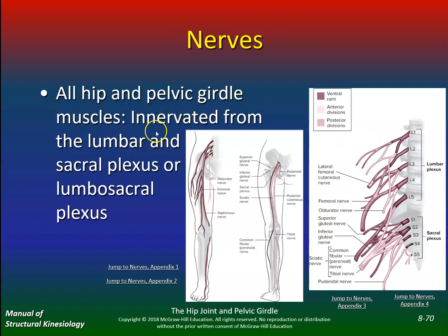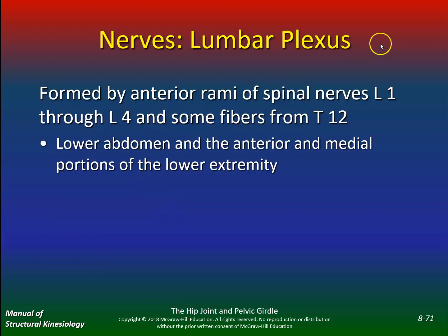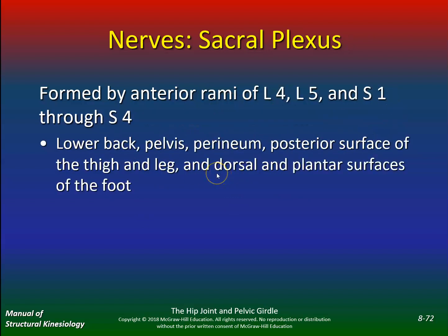The nerves: all hip and pelvic girdle muscles are innervated from the lumbar and sacral plexus. The lumbar plexus is formed by the anterior rami of the spinal nerves serving the lower abdomen and anterior medial portions of the lower extremity. You want to know — if there's damage to this, what will happen? In your movement presentations you labeled all the nerves, and you can see that damage to just one nerve can affect a lot of muscles.